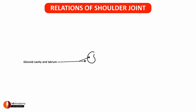This is the pear-shaped glenoid cavity. This is the glenoid labrum surrounding it. The glenoid labrum is interrupted superiorly by the attachment of the long head of biceps brachii.